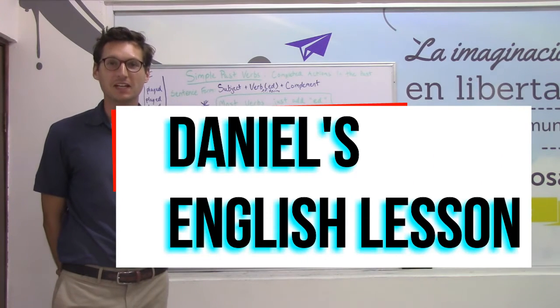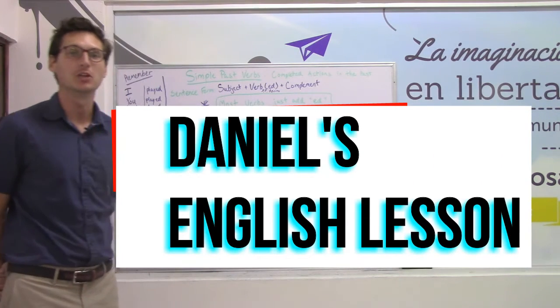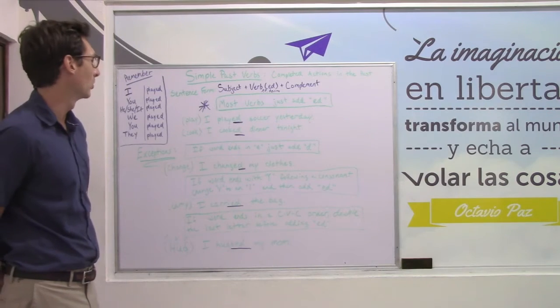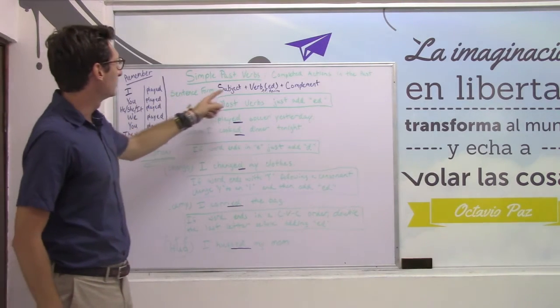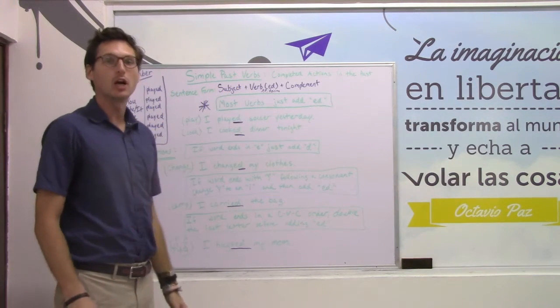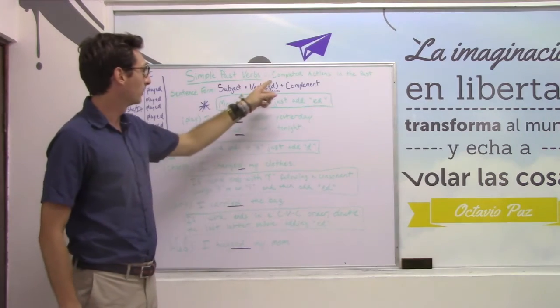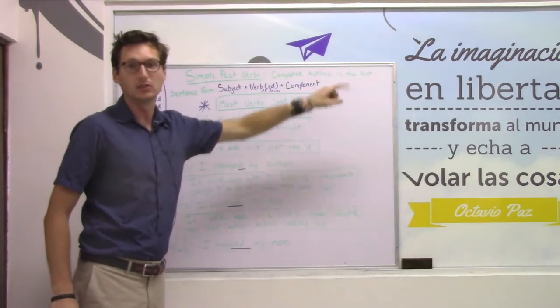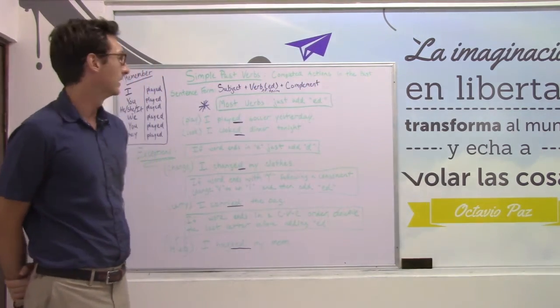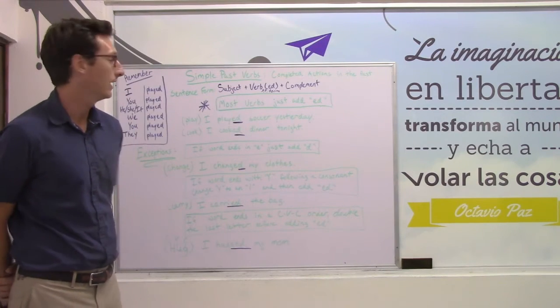Good morning class, I'm Daniel, and today we are going to be learning about simple past verbs. We use simple past verbs when we're talking about actions that have been completed in the past. They have been in the past, they complete in the past, and they will stay in the past.